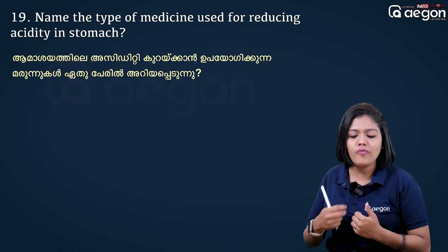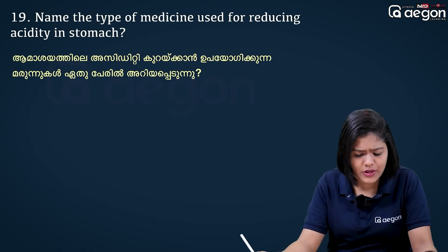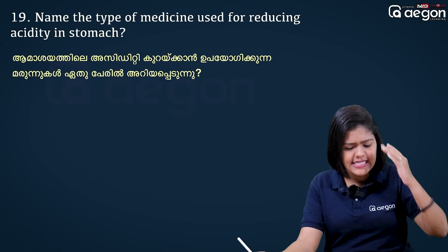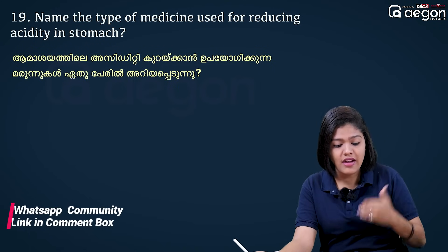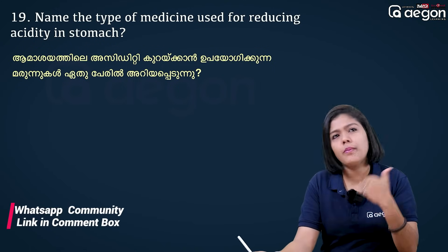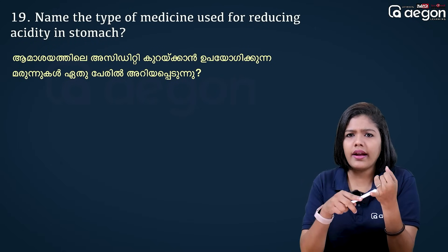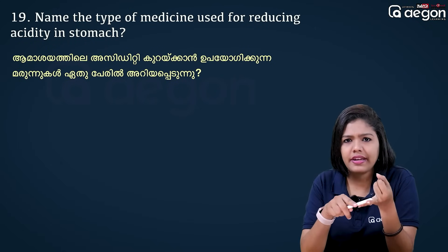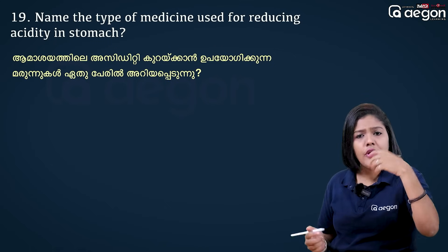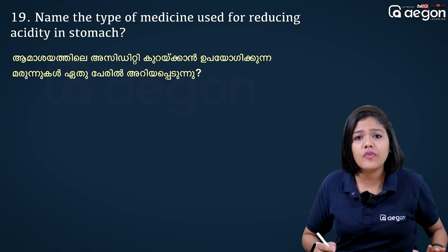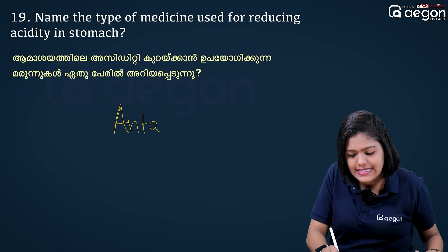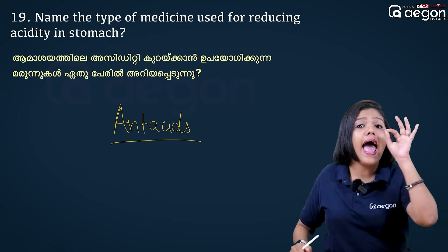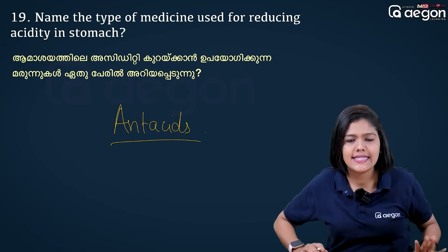What kind of medicine is used for reducing acidity in the stomach? Medicines like Eno, Digene, and Gelusil are used. These are called Antacids — we call them antacids.